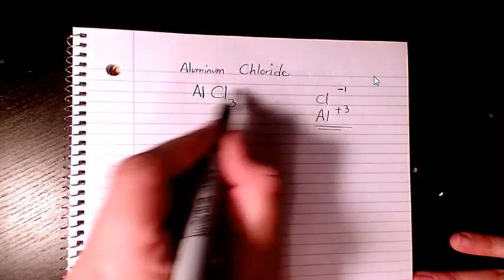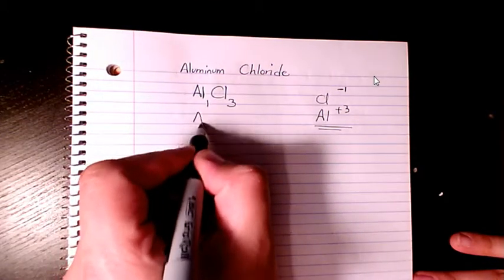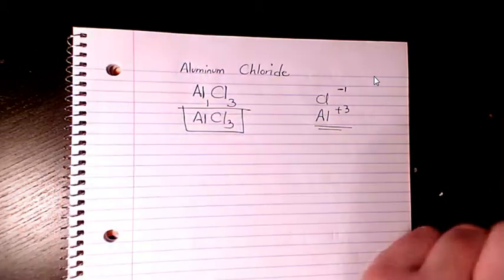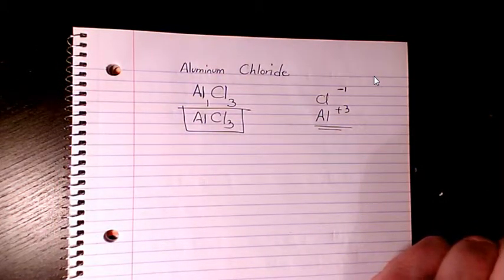But we don't write the 1, so it's going to be AlCl3. That's basically the molecular formula of aluminum chloride.